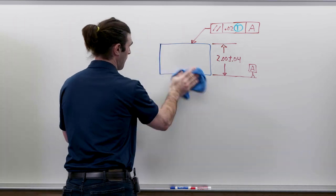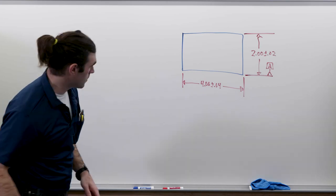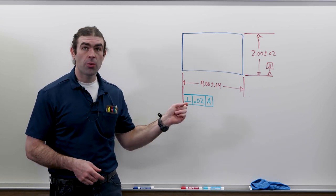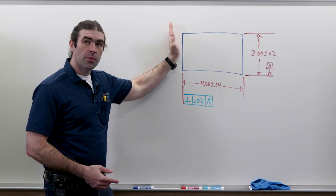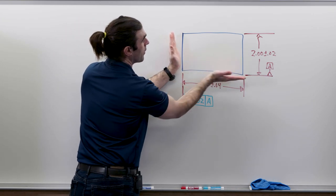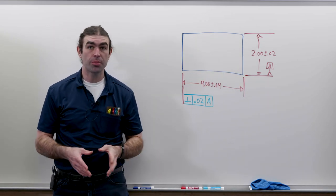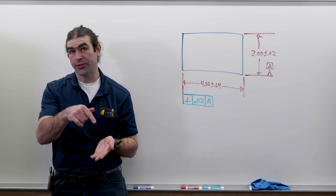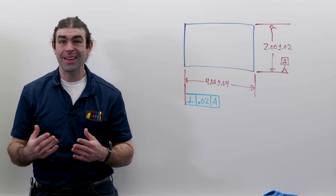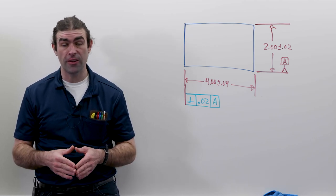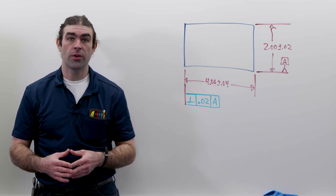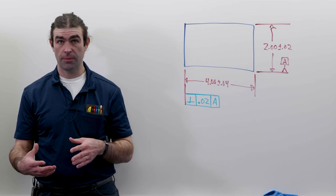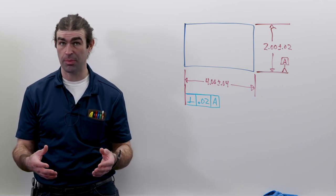Now let's move on to perpendicularity applied to a surface — it's very similar to parallelism. In this case the orientation tolerance is applied to the extension line, indicating the controlled surface is perpendicular to the datum. The check is about the same, except you typically put the part up on an angle plate and get it vertical for easier measurement. The tolerance zones are the same as parallelism. One thing to note: you can have more than one datum reference. With two datum references for perpendicularity, it doesn't control location — it just controls rotation when you go to inspect.